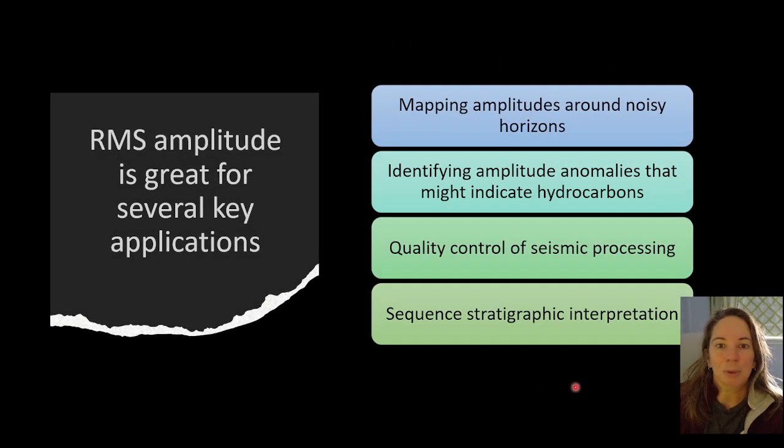And so RMS amplitude is really great for a lot of reasons. It's good when you're trying to map higher amplitude packages around noisy horizons because of that squaring and then taking the square root. It helps cut through the noise to reveal more of the true signal. It's also a really powerful tool for identifying amplitude anomalies that can indicate hydrocarbon presence.